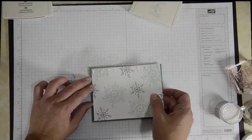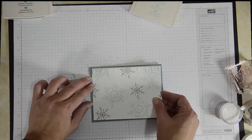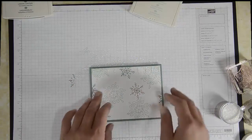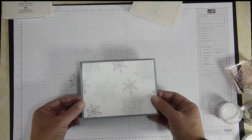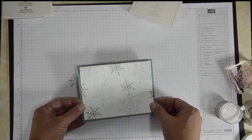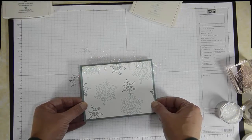So I'm just going to adhere my card now on top of my Lost Lagoon cardstock, and then I can add my sentiment to it. You can see how pretty that is. It adds a subtle wintry effect to it.